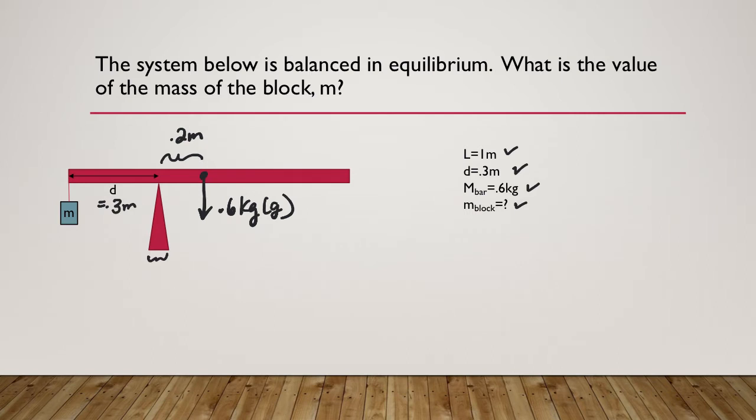And then we have the weight of this mass here. I'm just going to call it mg because we don't know what that is. You can see that relative to this pivot point, those two forces create opposite torques. The 0.6 kilogram g, the one on the right, creates a clockwise torque, and the unknown mass creates a counterclockwise torque.